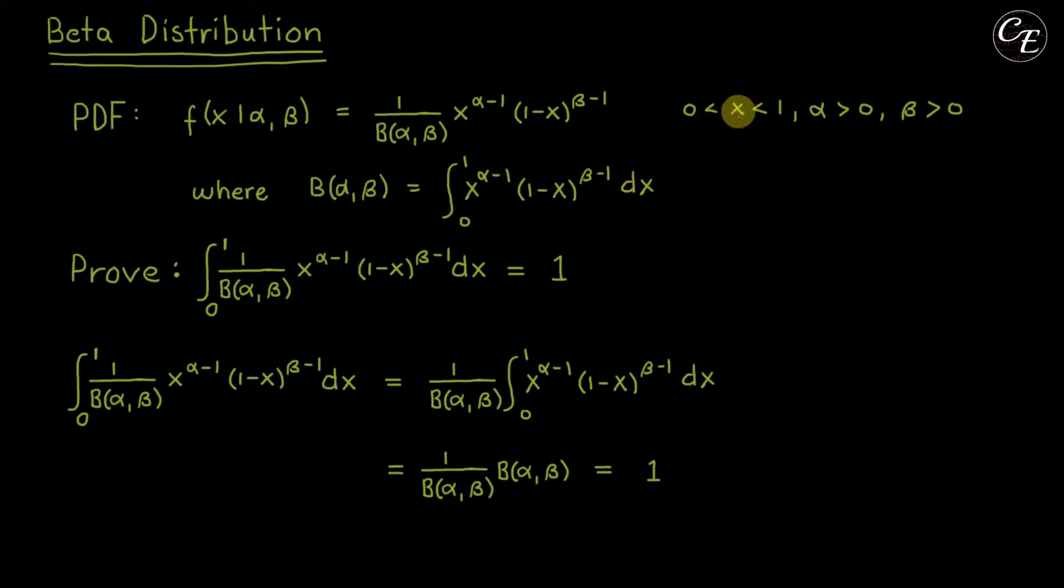The domain x is defined from 0 to 1, the parameter alpha is defined to be greater than 0 and this parameter beta is also defined to be greater than 0.